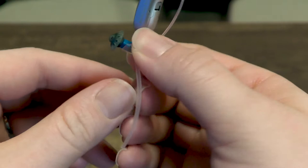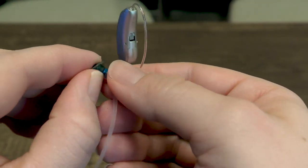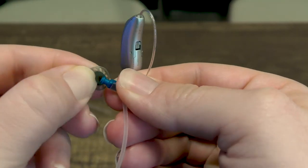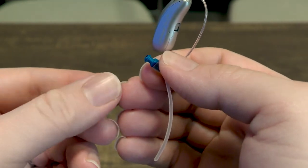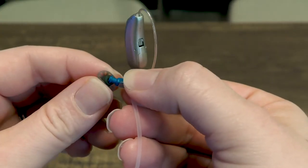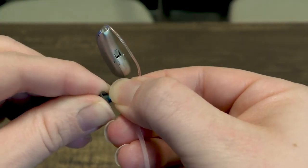I'll show you how to change the domes on the Phonak Marvel hearing aid. So you peel off the domes and then to place the domes back on the speaker you just press it on.